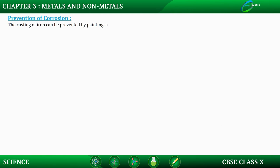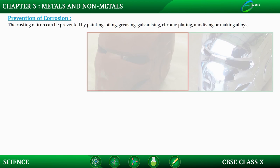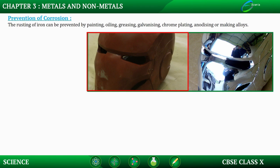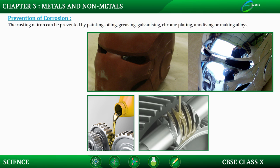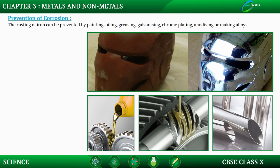The rusting of iron can be prevented by painting, oiling, greasing, galvanization, chrome plating, alloying, or making alloys. If we have anything made up of iron we can paint it with a coat so that the metal does not come in contact with the surroundings and does not rust. Oiling forms a layer on the iron so it does not contact the surroundings and rusting is prevented. Greasing works the same way as oiling.